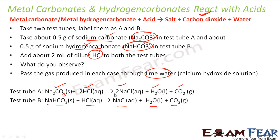First write out all the equations, then balance them. With balancing, we find that sodium carbonate needs two molecules of hydrochloric acid to give NaCl, water, and carbon dioxide. Sodium hydrogen carbonate needs one HCl. So the general conclusion: any metal carbonate or metal hydrogen carbonate reacted with acid gives salt, carbon dioxide, and water.